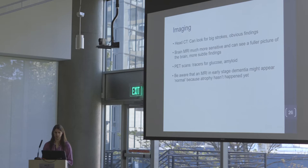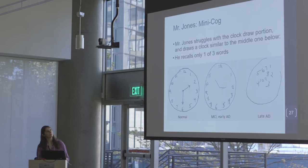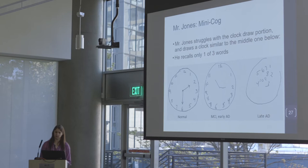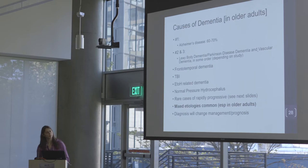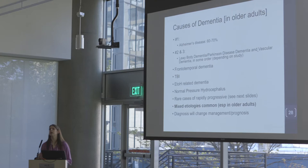Back to Mr. Jones — you bring him back, do a mini-cog, he draws a poor clock, and only remembers one of three words. He probably needs a full workup for dementia. The most common cause is Alzheimer's — if you think it's Alzheimer's, it's probably Alzheimer's. Second and third most common, depending on who you ask, are vascular dementia and Lewy body or Parkinson's-related dementia. Frontotemporal dementia is rarer but common enough that I've seen quite a few cases. Traumatic brain injury is also out there. Mixed pathology is common — you can have vascular and Alzheimer's, or Parkinson's and Alzheimer's together.